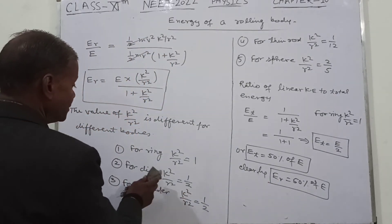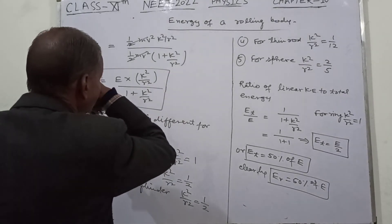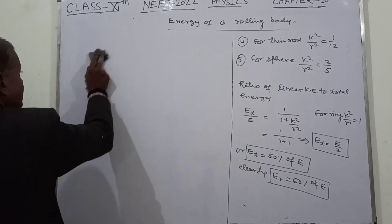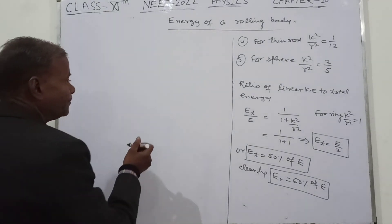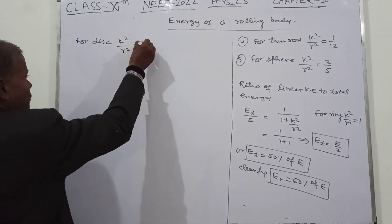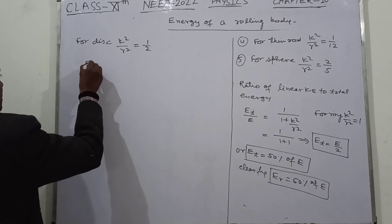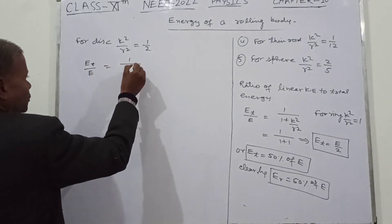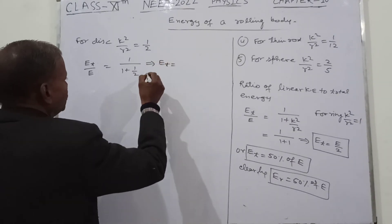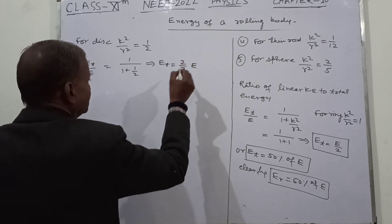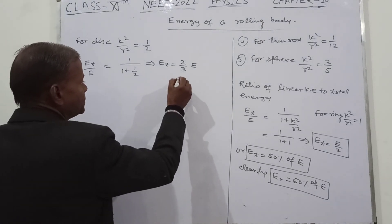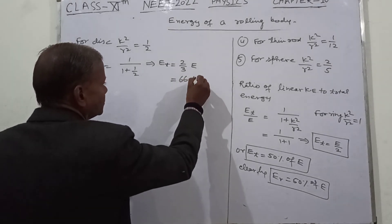Now for a solid cylinder, where k²/r² = 1/2: E_T/E = 1/(1 + 1/2) = 1/(3/2) = 2/3. So E_T = (2/3)E, which is approximately 66.6% of total energy.